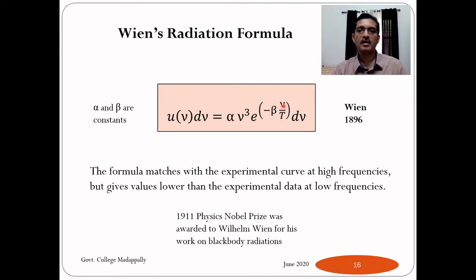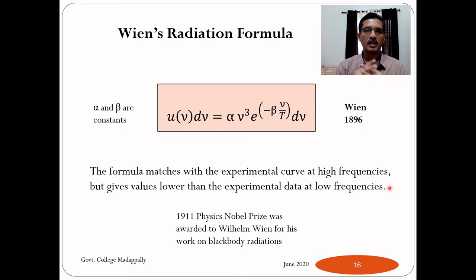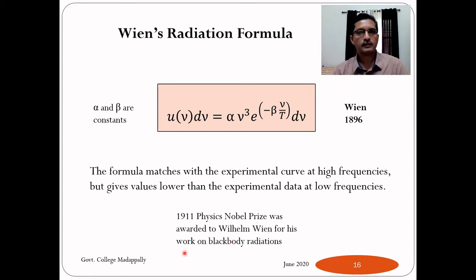When compared with experimental curves, Wien's formula matches at high frequencies but gives values lower than experimental data at low frequencies. So it is not completely correct. Nevertheless, in 1911, the physics Nobel Prize was awarded to Wilhelm Wien for his work on blackbody radiations.